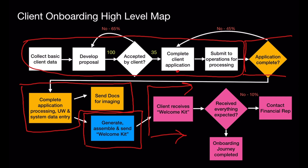From a rework perspective, we have a couple of points in the process where things are not going as anticipated. Sixty-five percent of the time the customer did not accept the proposal the financial rep provided. Forty-five percent of the time the packet the financial rep submitted to the operations team was not deemed complete, so the process came to a stop and the packet was sent back to the financial rep. And roughly ten percent of the time the client felt they did not get everything they anticipated. Every time the process comes to a stop or does not proceed as designed, that by definition means you're going to end up with some rework.